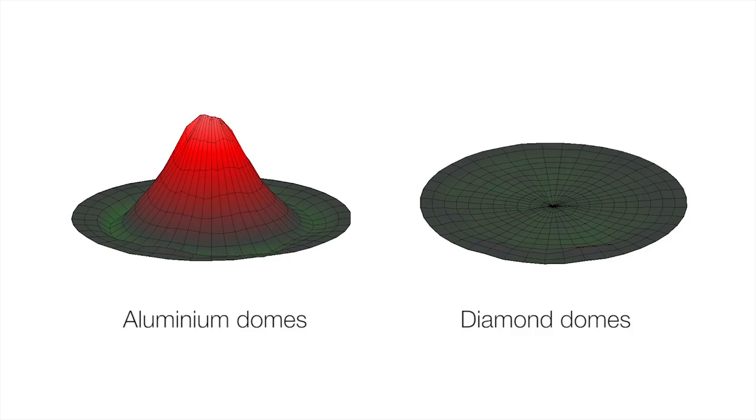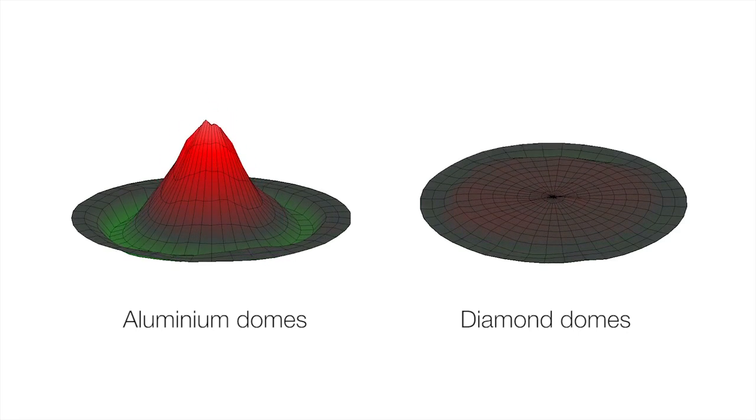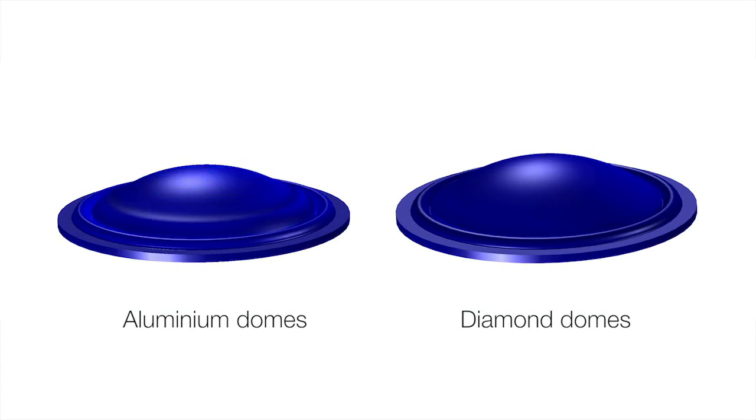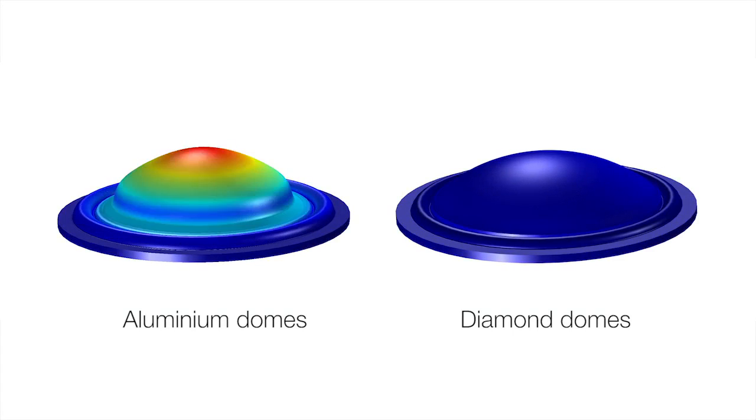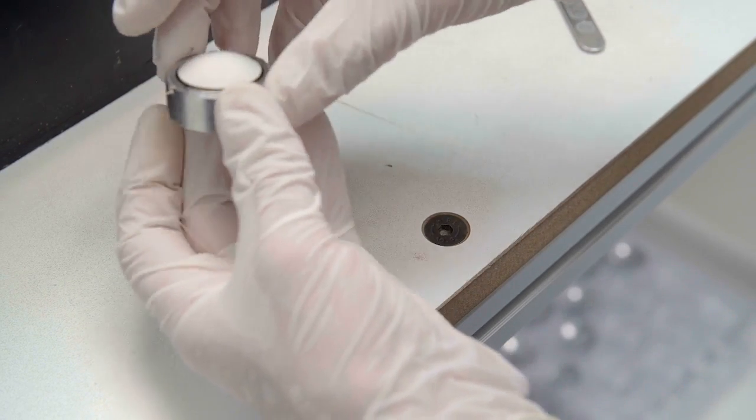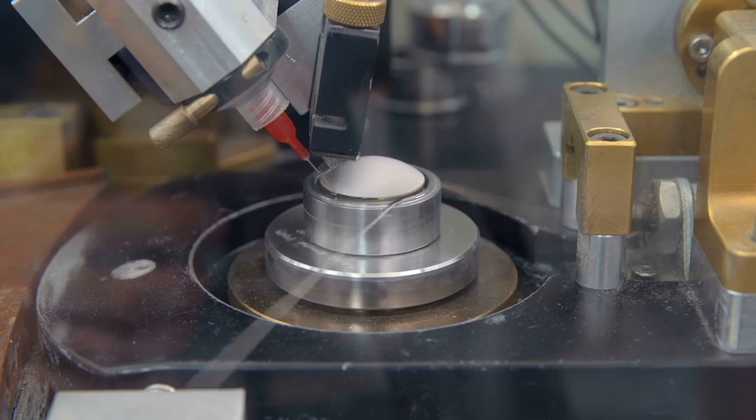Compared to the standard break-up of an aluminium tweeter at 38 kHz, Bowers and Wilkins diamond tweeters break up at 70 kHz, well above the limit of human hearing, and as a result push unwanted resonances way beyond what the listener can hear.